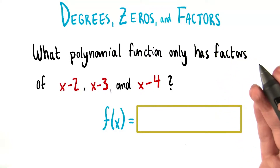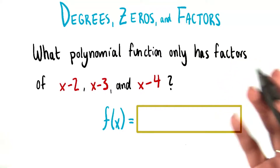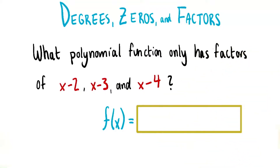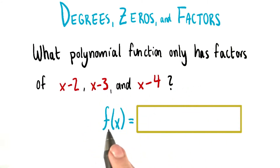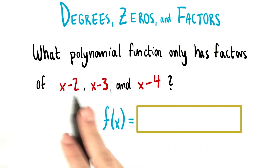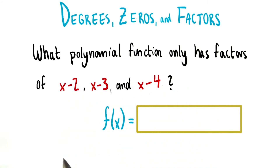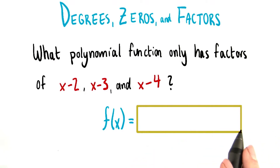So, what's the simplest polynomial function that we can create from the three factors we just found? Note that the only factors this polynomial function will have are these three — it won't have any others. You don't need to expand or simplify the expression, just write it in factored form right here.